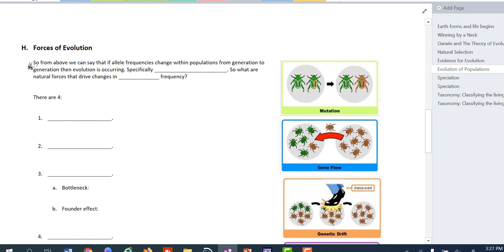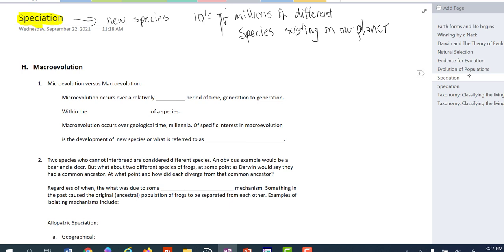When we were talking about microevolution, we're talking about small changes. We could say that if allele frequencies change within populations from generation to generation, then evolution is occurring. Specifically, we would say microevolution. Because they're small changes from one generation to the next.